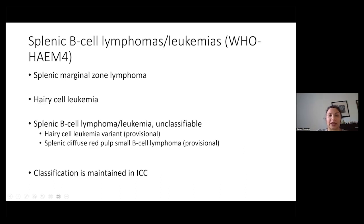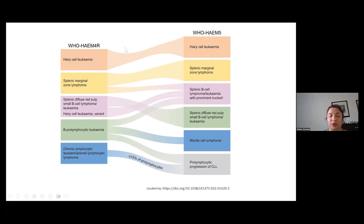Moving on to splenic B cell lymphomas: the four entities in the WHO fourth edition are splenic marginal zone lymphoma, hairy cell leukemia, and what was known as splenic B cell lymphoma leukemia unclassifiable — under which there were two provisional entities: hairy cell leukemia variant and splenic diffuse red pulp small B cell lymphoma. This classification is still maintained in the ICC. In the fifth edition, hairy cell leukemia has stayed the same, as has splenic marginal zone lymphoma. Hairy cell leukemia variant and B prolymphocytic leukemia are now subsumed into splenic B cell lymphoma leukemia with prominent nucleoli.